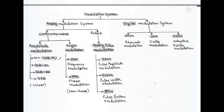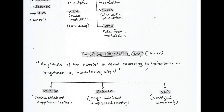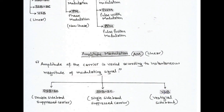Amplitude modulation is a linear process. According to its definition, the amplitude of the carrier wave is varied according to the instantaneous value of the magnitude of the baseband or modulating signal. When the amplitude parameter of the carrier is changed according to the message signal, it is called amplitude modulation — standard AM or double sideband full carrier. Standard AM is further classified into DSBSC (double sideband suppressed carrier), SSB-SC (single sideband suppressed carrier), and VSB (vestigial sideband).